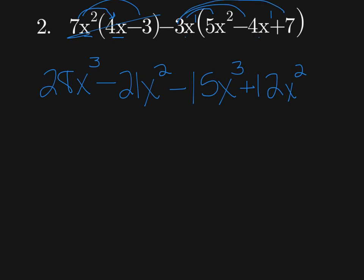And then the last one's negative 3x times 7, which is negative 21x. That's your first step. Always get rid of the parentheses first.